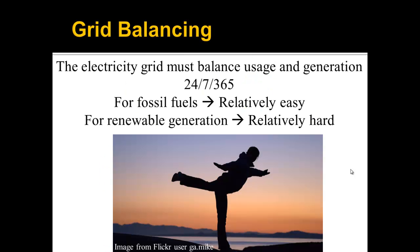Another key thing about the utility grid is that the electricity grid must balance usage and generation at all times — 24/7, 365 days a year. For fossil fuels, we can vary the amount of generation at different times by putting more coal in the fire or more natural gas. We'll talk about how renewable generation is going to change that as well.